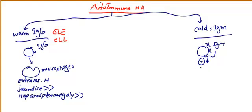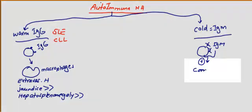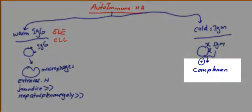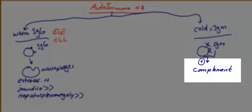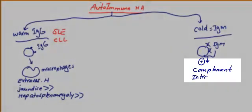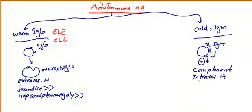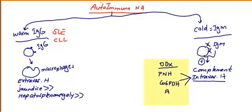but usually activates the complement. Complement activation means intravascular hemolysis. The differential diagnosis of intravascular hemolysis includes PNH, glucose-6-phosphate dehydrogenase deficiency, and autoimmune hemolytic anemia IgM cold type.